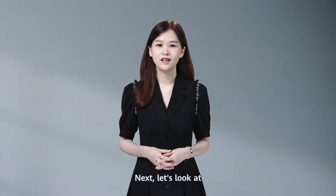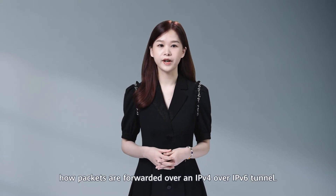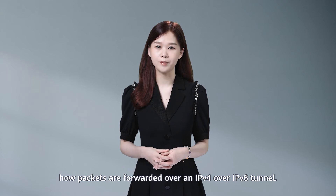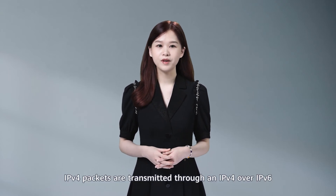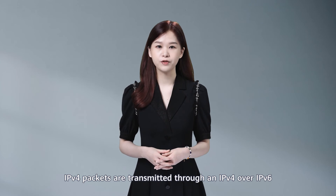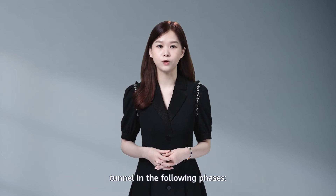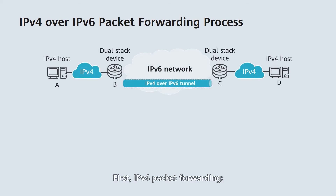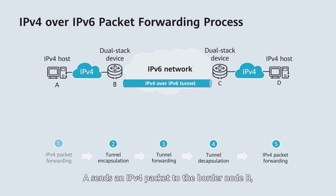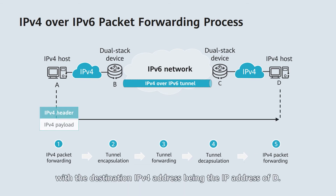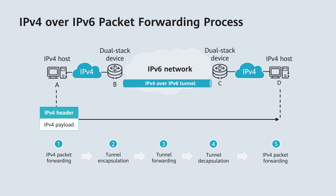Next, let's look at how packets are forwarded over an IPv4 over IPv6 tunnel. IPv4 packets are transmitted through an IPv4 over IPv6 tunnel in the following phases. First, IPv4 packet forwarding: A sends an IPv4 packet to the border node B, with the destination IPv4 address being the IP address of D. Second, tunnel encapsulation.